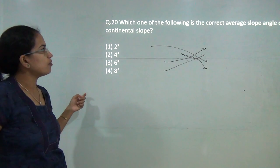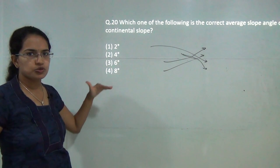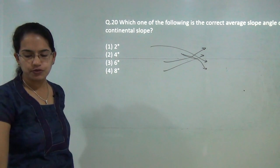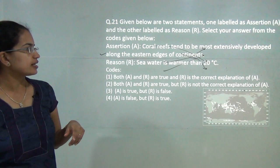Next question, which of the following is the correct average slope for the continental slope. You have the continental shelf followed by the continental slope and the continental slope is nearly 4 degrees. Correct answer would be 2, that is 4 degrees.